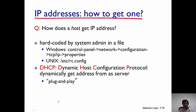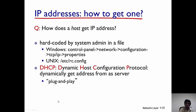An IP address can be hardcoded by the system admin in a file. For example, you could hardcode your IP address in Windows, Unix, or Mac. In Windows, all you have to do is go to the control panel, the network configuration, go to TCP/IP and set properties where you can actually give your IP address.